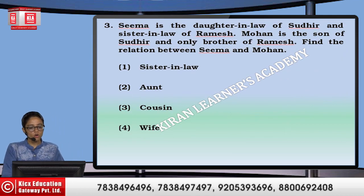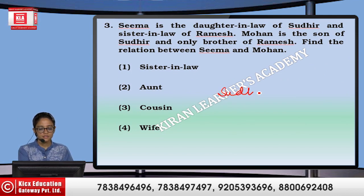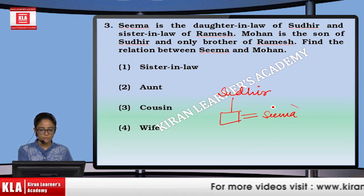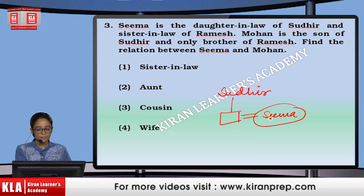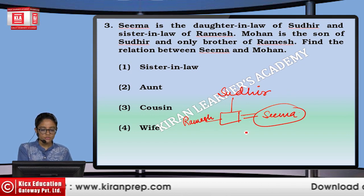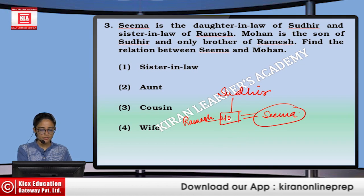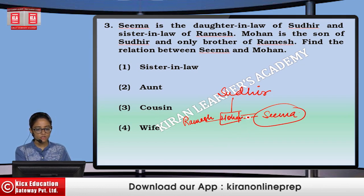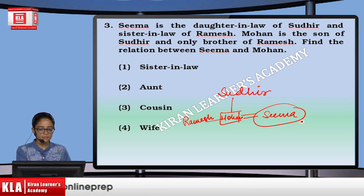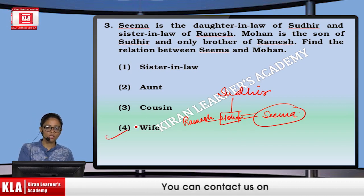Next: Seema is daughter-in-law of Sudhir. Sudhir's daughter-in-law means he has a son who is married to Seema. She is also sister-in-law of Ramesh, meaning husband's brother is Ramesh. Mohan is son of Sudhir, and only brother of Ramesh. Find the relation between Seema and Mohan. They are husband and wife. That means option number fourth.